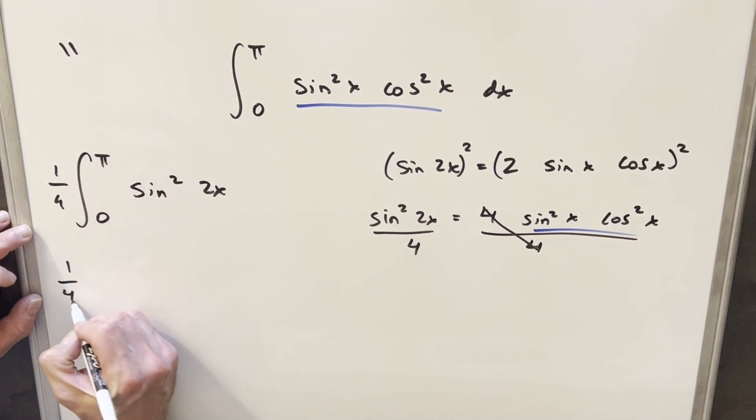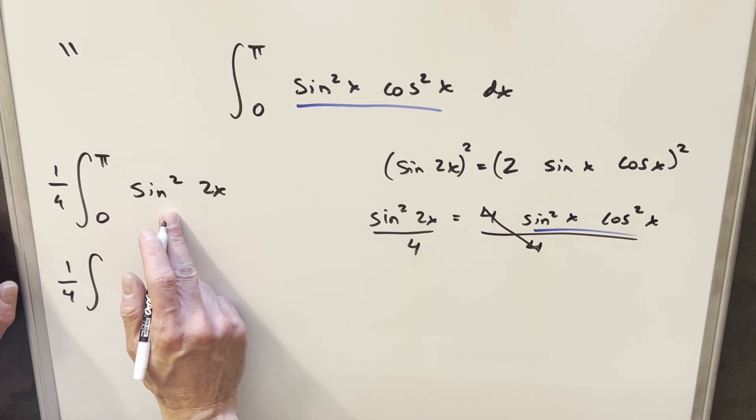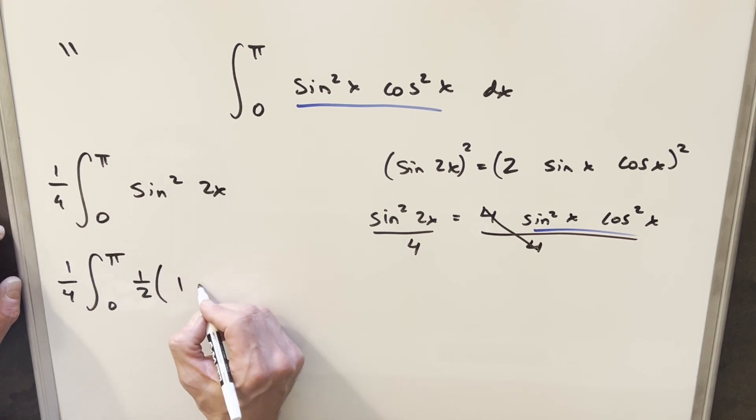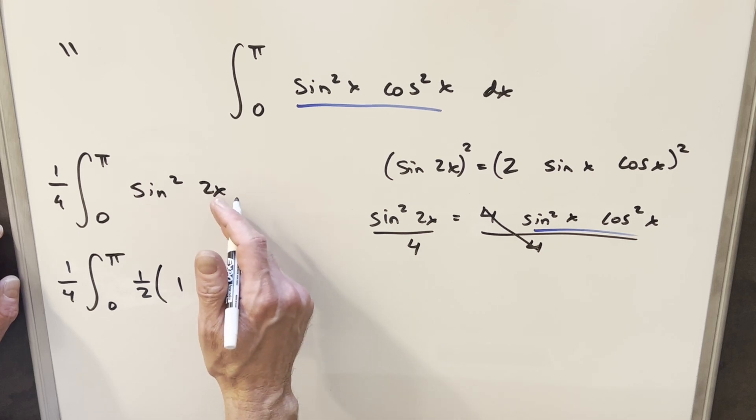But then from here, what I can do, I'm just going to rewrite again. We'll use the power reduction for sine on this. And so that's going to be the formula. So that's just going to be, we'll take a half out front, and we'll have 1 minus cosine. We double this angle, and so in this case, it's going to become 4x.